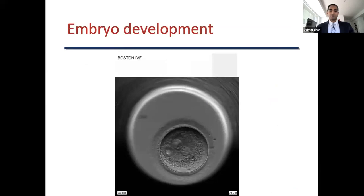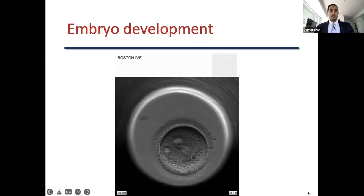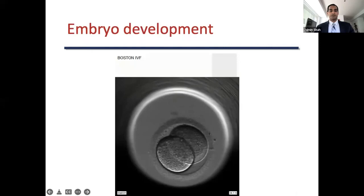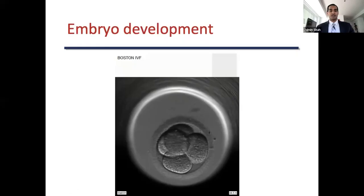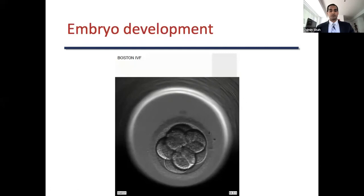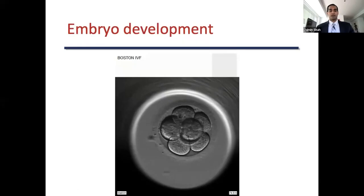Here's a time-lapse video of an embryo developing from the two pronuclei stage all the way to a blastocyst. This is the two PN stage. Now this is the two cell stage. This is the four cell stage. It's now progressing to the day three embryo, or six to eight cells. And now it's progressing to the day four, or the morula stage, about 16 to 32 cells.